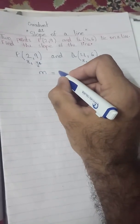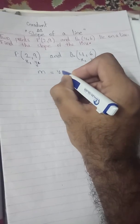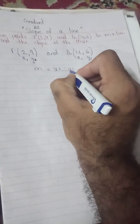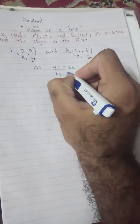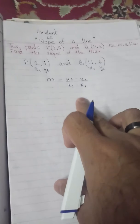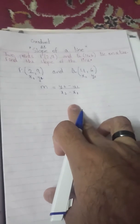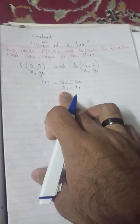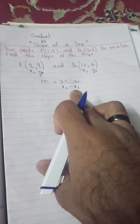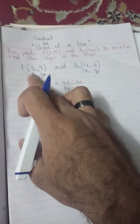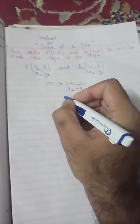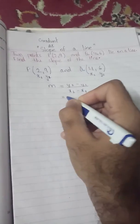The formula is: M equals (Y2 minus Y1) in the numerator, and (X2 minus X1) in the denominator. This is the only thing you have to remember because it is a very simple formula. I have the values of X1, Y1, X2, and Y2, and I will now replace them in this formula.